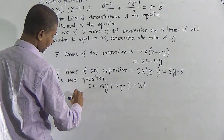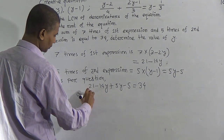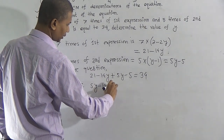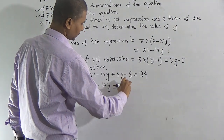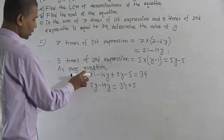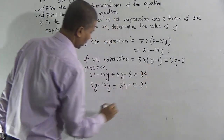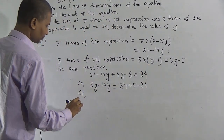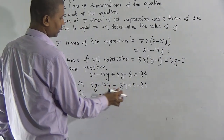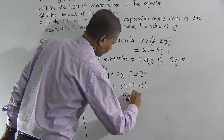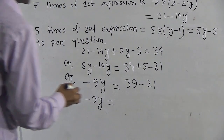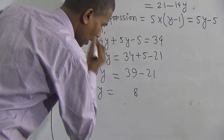Now solve this equation: 21 minus 14y plus 5y minus 5 equals 34. Separating the variables using transposition law: 5y minus 14y equals 34 minus 21 plus 5. That gives minus 9y equals 34 plus 5 minus 21. So 5y minus 14y equals minus 9y. And 34 minus 21 plus 5... working through: 9y equals 18.